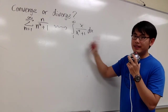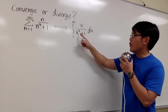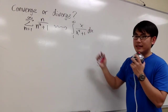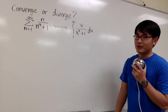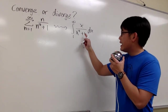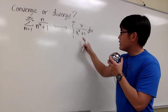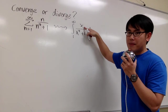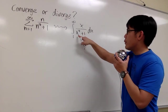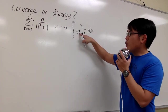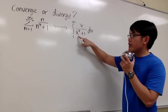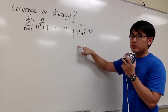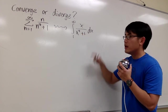We can integrate x over x to the fourth power plus 1, and this is a pretty fun one. To integrate this, notice that we have an x on the top and we have x to the fourth power. We will purposely look at x to the fourth power as x to the second power, squared.